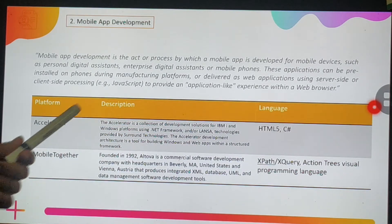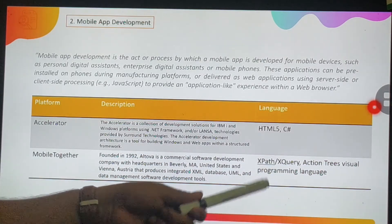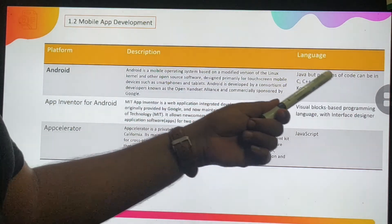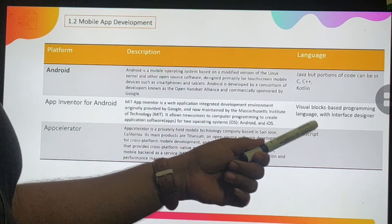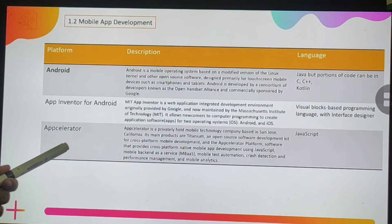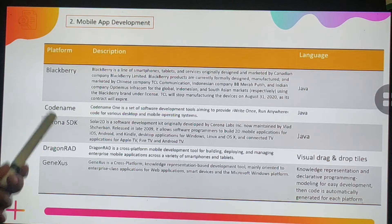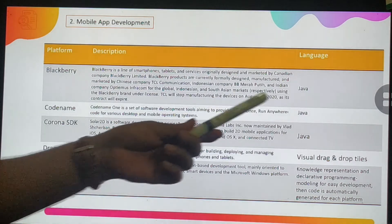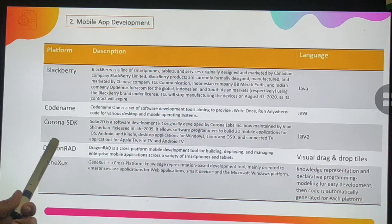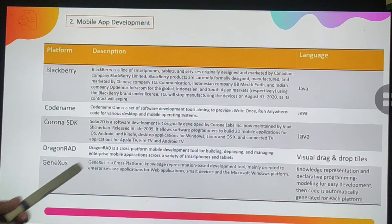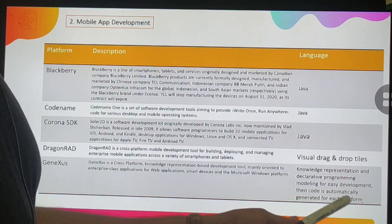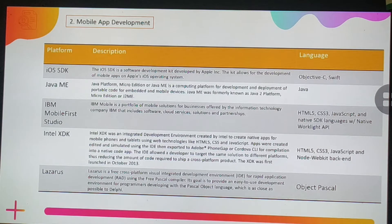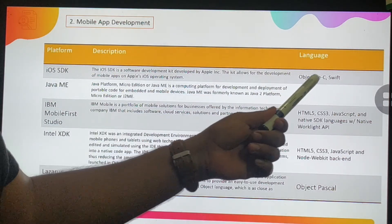Mobile app development is the process by which a mobile app is developed for mobile devices such as personal digital assistants, enterprise digital assistants, or mobile phones. Applications can be pre-installed during manufacturing or delivered as web applications. Mobile development platforms include Android (using Java, C, C++, and Kotlin), iOS SDK (using Objective-C and Swift), PhoneGap/Apache Cordova (using HTML, CSS, JavaScript), Xamarin (using C#), and Unity (using C#, JavaScript, and Boo).